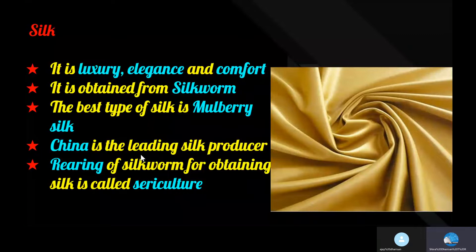Silk production is regarded as an important tool for economic development of a country, as it is a labor-intensive and high-income generating industry that churns out value-added products of economical importance. China is the leading silk producer in the world. Other major silk producing countries include India, Japan, and Korea.